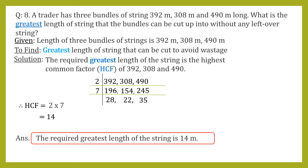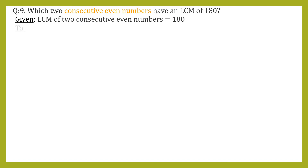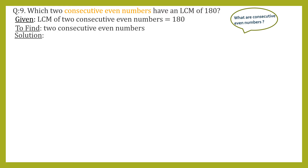We can highlight the final answer. Let's continue with question number 9: which two consecutive even numbers have an LCM of 180? The LCM of two consecutive even numbers is 180. We have to find those two consecutive even numbers.